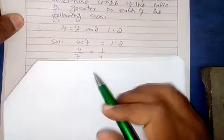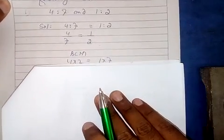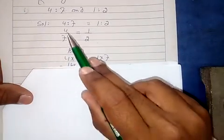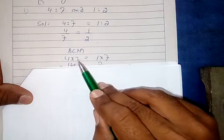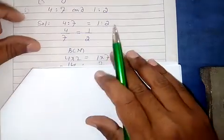4 upon 7 and 1 upon 2. By cross multiply, so 4 to 2 and 1 to 7, then 1 to 7.